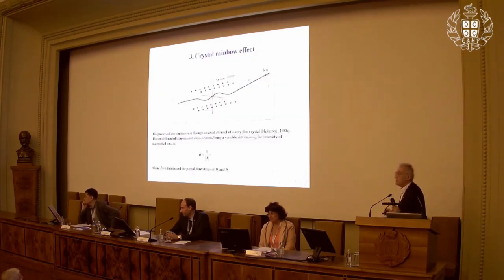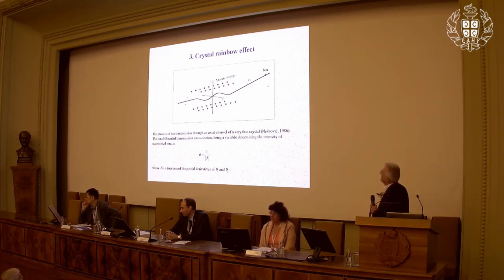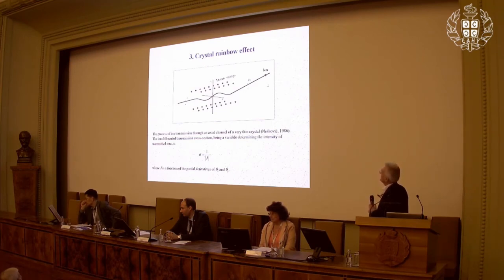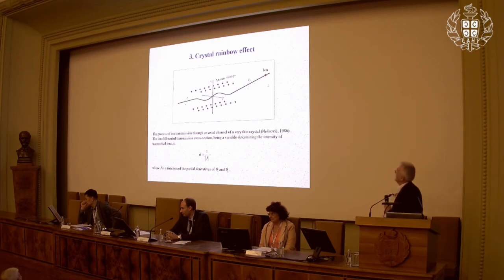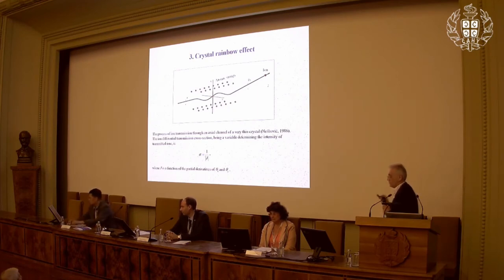Let us now move to the crystal rainbows. This is a channel of a crystal — there are many atomic strings around, and four of them define a crystal channel. You can enter that channel with charged particles, for example protons or other ions. The impact parameter is the initial position of the ion in the entrance plane. The scattering angle has vertical, horizontal, and longitudinal axes.